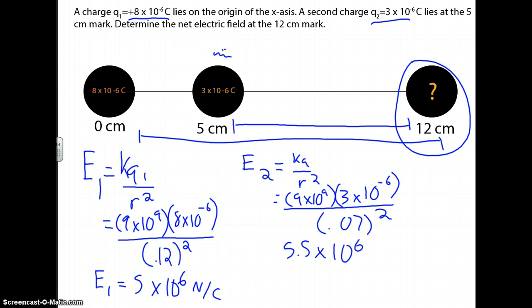But you're not done, so now you need to take this one and this one and add it together. And you end up getting the net electric field. Box it out. So, 1.1 times 10 to the 7th newtons per coulomb. And that's how you figure that kind of problem out.